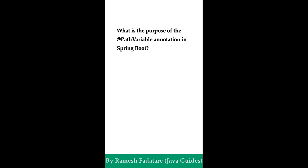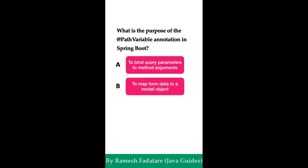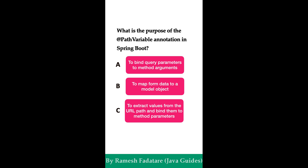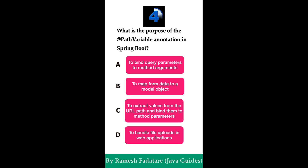What is the purpose of the @PathVariable annotation in Spring Boot? Option A: to bind query parameters to method arguments. Option B: to map form data to a model object. Option C: to extract values from the URL path and bind them to method parameters. Option D: to handle file uploads in web applications. The correct answer is option C. The @PathVariable annotation in Spring Boot is used to bind values from the URI path to method parameters in the controller, allowing you to capture dynamic parts of the URL for processing, such as retrieving specific resources based on an ID.